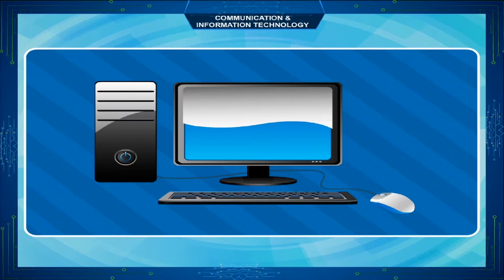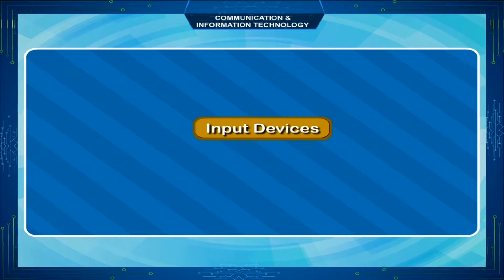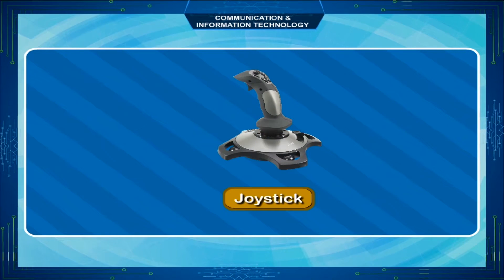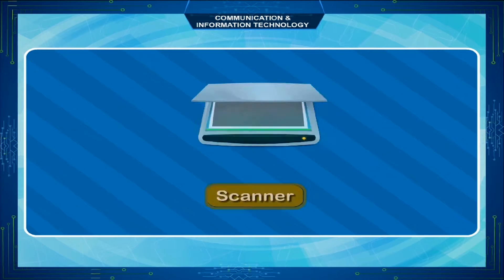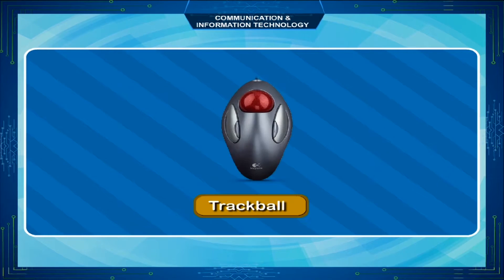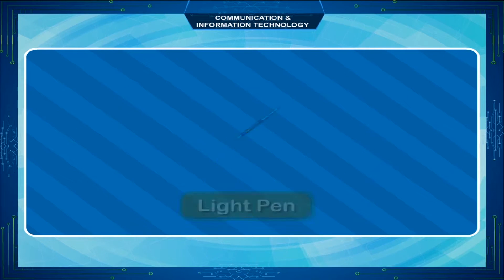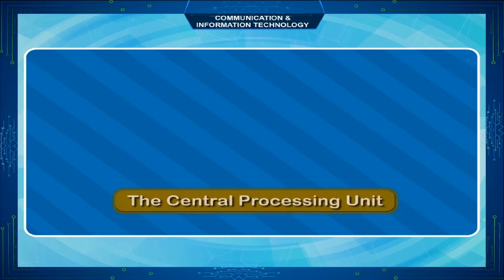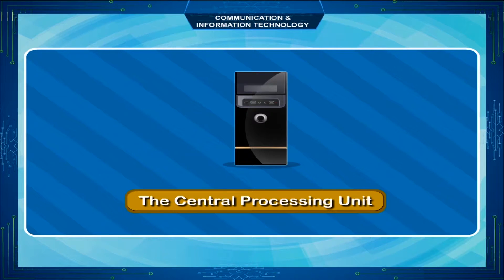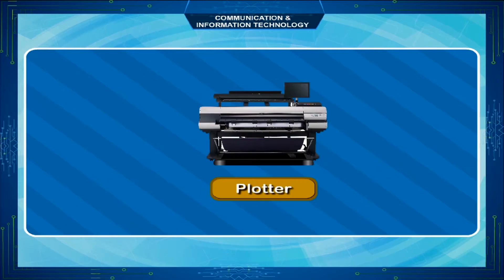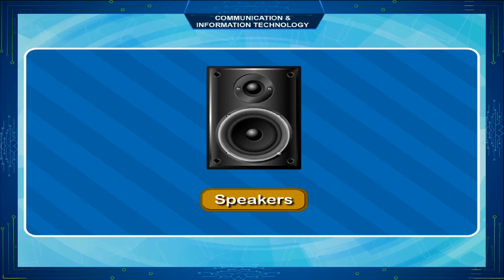The hardware includes Input Devices: Keyboard, Mouse, Joystick, Scanner, Touchscreen, Trackball, Light Pen, etc. Processing Device: the Central Processing Unit. Output Devices: Monitor, Printer, Plotter, Speakers, etc.